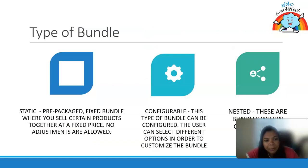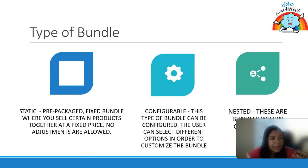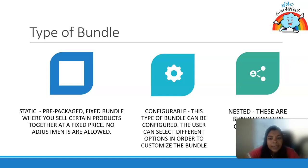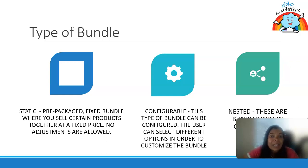There are multiple types of product bundle: static, configurable, and nested. Static can be understood as a pre-packaged, fixed bundle where we cannot make changes. Configurable is the type of bundle where configuration can be done — it can be customized based on the user's interest. Nested is like one bundle inside another bundle.